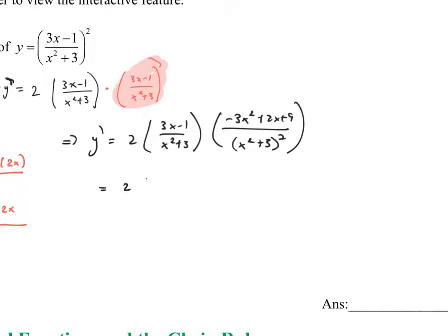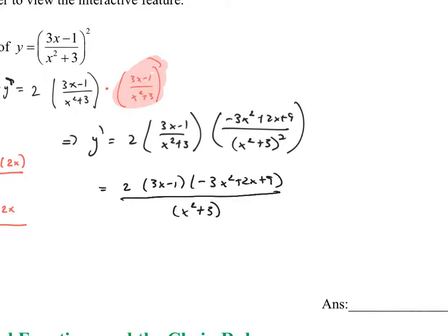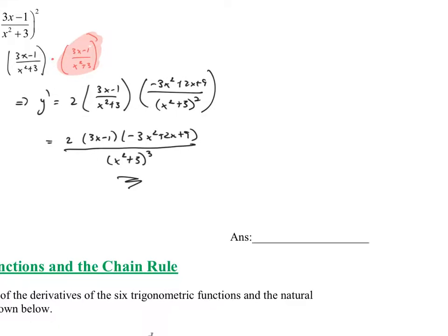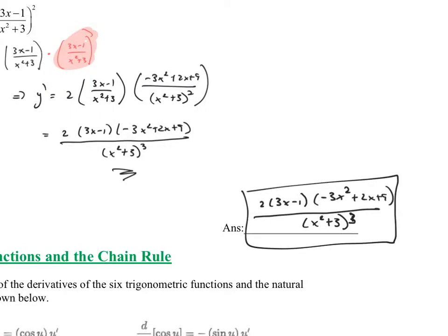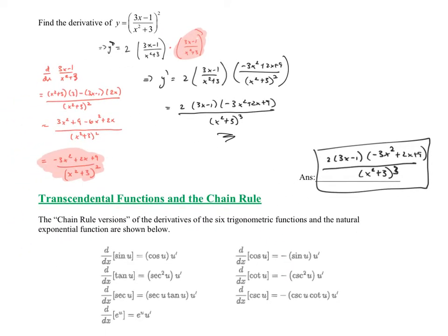Other than combining those factors, I don't see much else to simplify. So the final answer is: 2 times (3x - 1) times (−3x² + 2x + 9), all over (x² + 3) cubed. Make sure you can see that's a cube. That's my final answer.